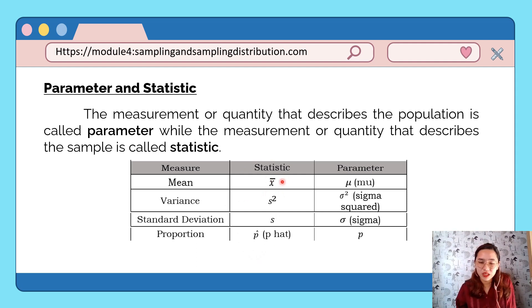For our sample, we use this symbol for the mean (x-bar), and this for variance (s²) and standard deviation (s). Also, for proportion, we use this symbol (p-hat). For the population, these are the notations commonly used - the mean is represented by mu (μ).